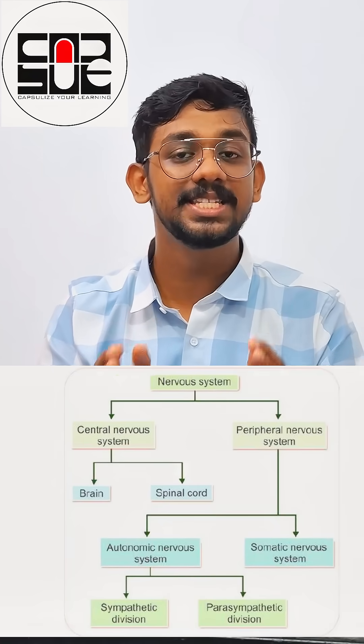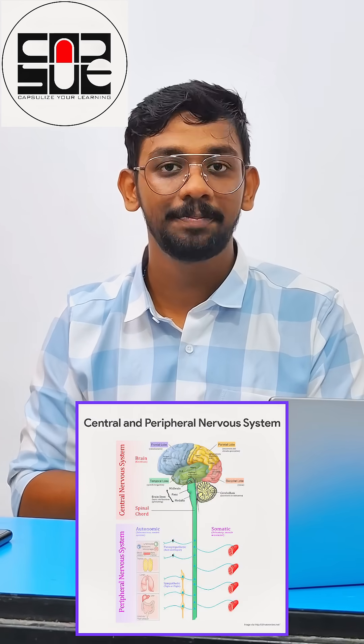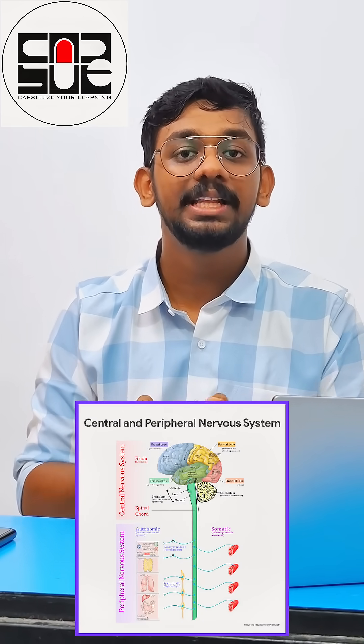We can move to the basic division of the nervous system. It includes the central nervous system and the peripheral nervous system. The central nervous system includes the brain and the spinal cord. The peripheral nervous system includes the autonomic nervous system and the somatic nervous system. The somatic nervous system controls the voluntary activities of your body, and the autonomic nervous system controls the involuntary activities.